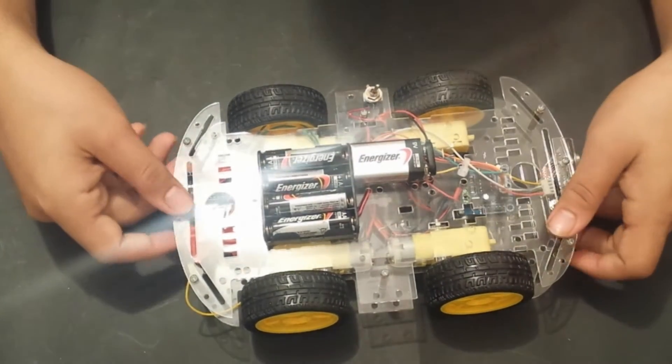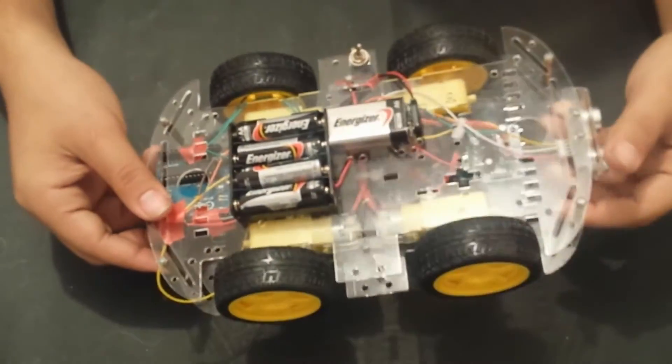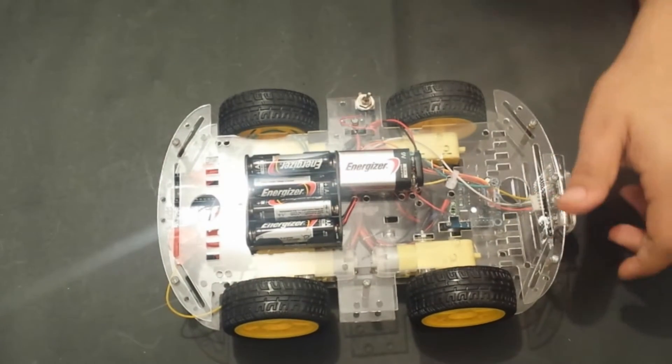So the first thing I am going to do is take the top off of this chassis so that I can access all of the circuitry and I will be able to mount my line following module.